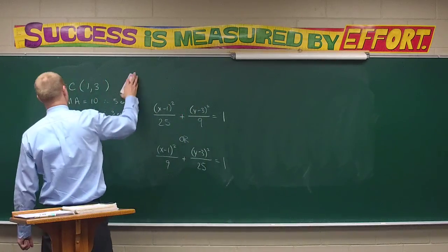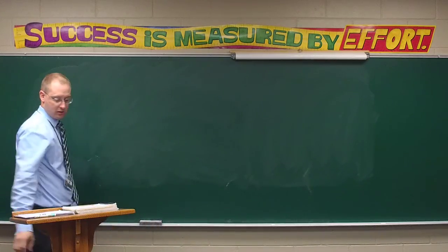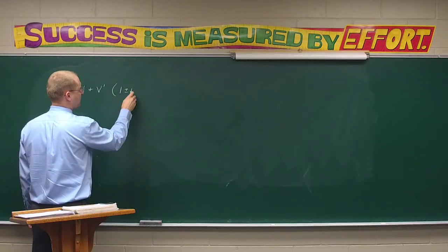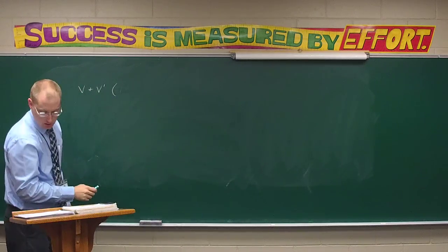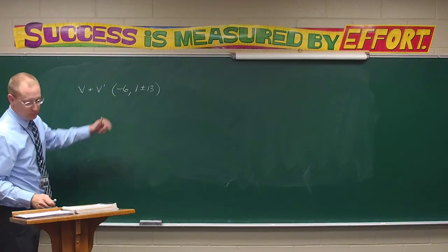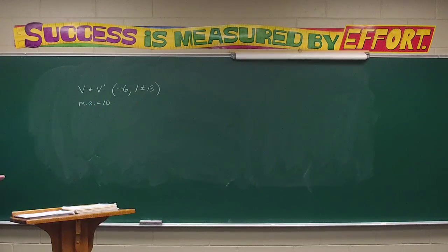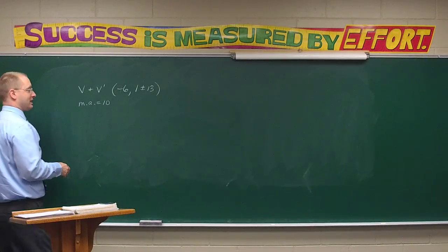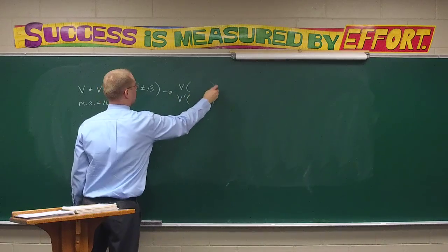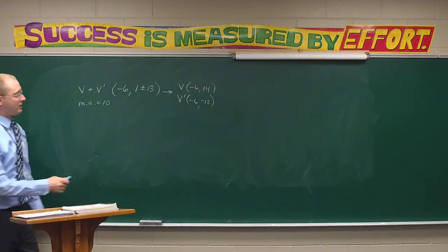Let's take a look at letter C. The vertices are at (−6, 1 ± 13), so we could say they are at (−6, 14) and (−6, −12). A quick sketch: backwards 6 up 14, backwards 6 down 12 — these are my vertices. The major axis is definitely the y-axis, so a squared goes under the y. The center point is (−6, 1), since I went up 13 and down 13 from it.